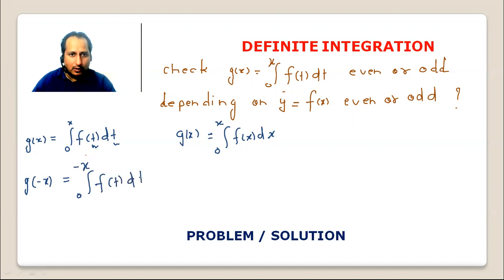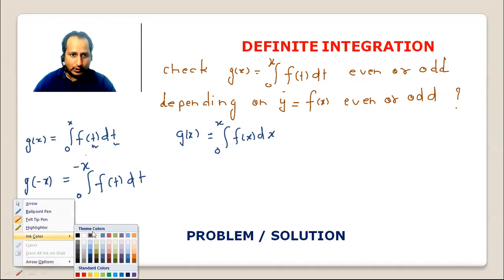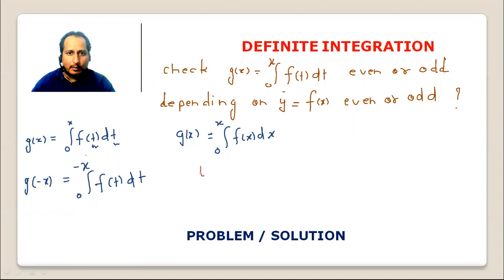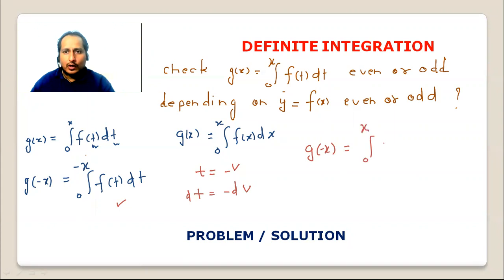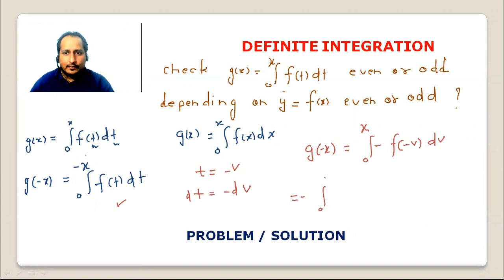To check even or odd depending on f(x), I replace t with -v, so dt becomes -dv. Now I adjust the limits: g(-x) = integral from 0 to -x of f(t) dt. After substitution, when t = 0, v = 0; when t = -x, v = x. So g(-x) = integral from 0 to x of f(-v) times (-dv), which equals minus the integral from 0 to x of f(-v) dv.